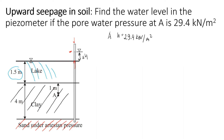We will solve this by estimating pore water pressure at point A, since we already know its total value is 29.4 kN/m². We start with the statement that water pressure at point A equals the hydrostatic water pressure plus the additional water pressure that comes from the upper seepage through the clay. The hydrostatic water pressure is the unit weight of water times the height of water above point A.